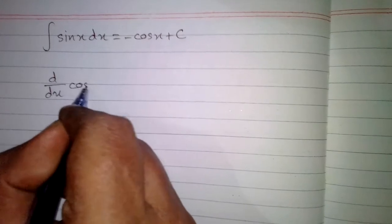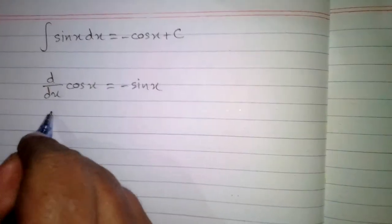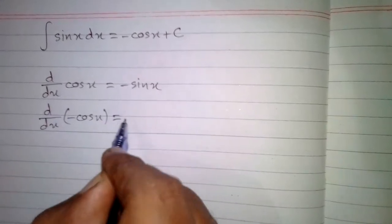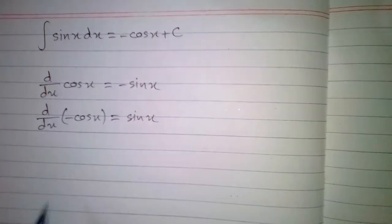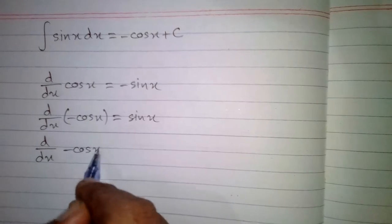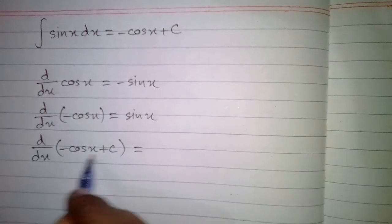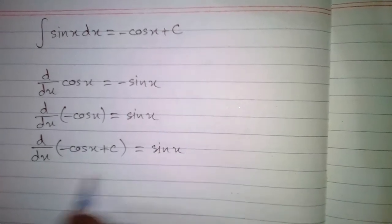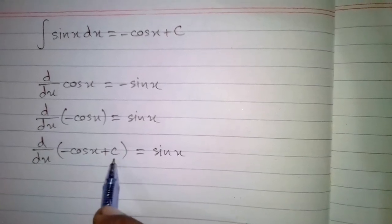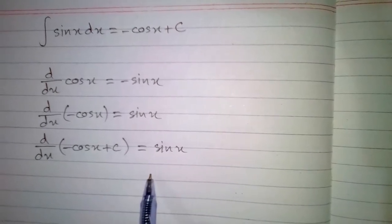First of all, we know that the derivative of cos(x) is -sin(x). So the derivative of -cos(x) is sin(x). And if we add a constant, giving us -cos(x) + C, then the derivative of -cos(x) + C is also sin(x), because the derivative of the constant is zero. So we know that integration is the reverse process of differentiation.